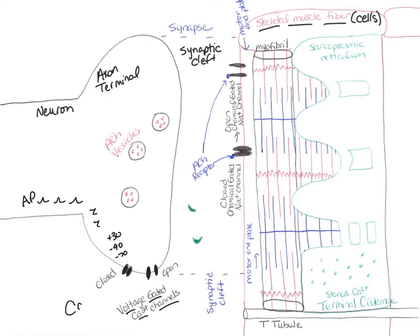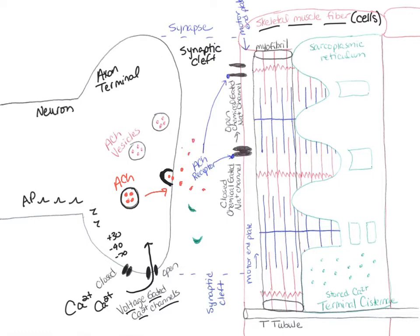Calcium is higher in the extracellular fluid, so calcium will move into the synaptic terminal. When calcium moves into the synaptic terminal, it's going to stimulate these vesicles to release their contents out into the synaptic cleft. These vesicles contain chemicals called ACh or acetylcholine — thousands of these chemicals. When calcium arrives, it causes these vesicles to fuse to the wall of the axon terminal through a process called exocytosis, releasing the ACh molecules out into the synaptic cleft.